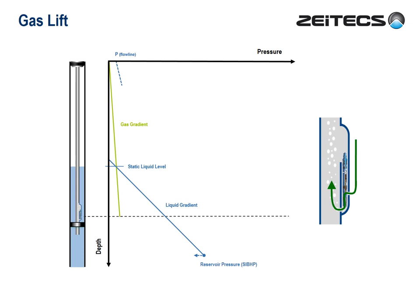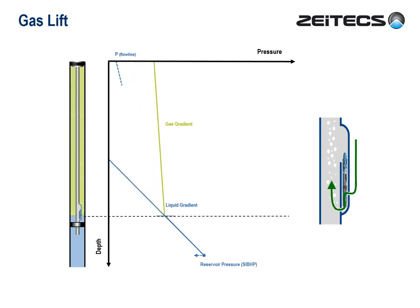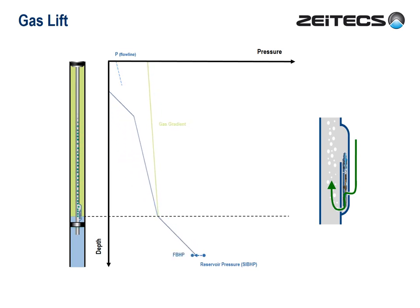Now watch what happens when we force gas into the annulus. The gas displaces the liquid in the annulus down until it reaches the injection point. And then, when it bubbles into the tubing, it lightens the fluid column progressively from the bottom up. And see what happens — again, we've achieved both of our objectives. We have drawdown and flowline pressure.